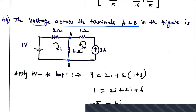How many loops are there? There are two loops. For each loop, consider the current. Let the current flowing in the first loop be I, and the current flowing in the second loop equals the current source value — so the current in the second loop is 3 amps. Our aim is to find the voltage across this 2-ohm resistor, which is the resistance value multiplied by the current flowing through it.